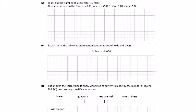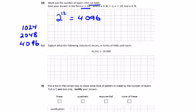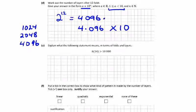Part d: we're asked to work out the number of layers after 12 folds, so that will be 2 to the power of 12. Without a calculator: 2 to the power of 10 is 1024, double it to get 2048, and double it again to get 4096. We're asked for it in scientific notation — a × 10^n, where a must be between 1 and 10 — so that's 4.096 × 10^3, since we move the decimal 3 places.